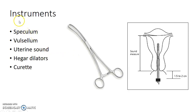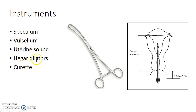Now let us see about the instruments used in DNC. Speculum, vulsellum, uterine sound, Hegar dilators, and curette are the various instruments used in DNC.